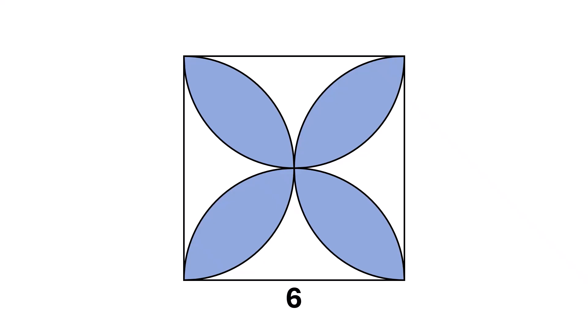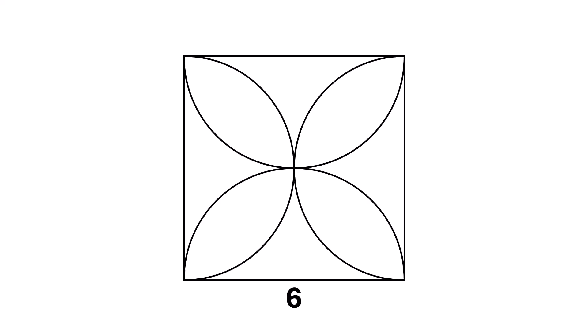we're looking at an interesting geometry problem. We have a square with a side length of 6 units. Inside this square are four perfectly placed half circles,